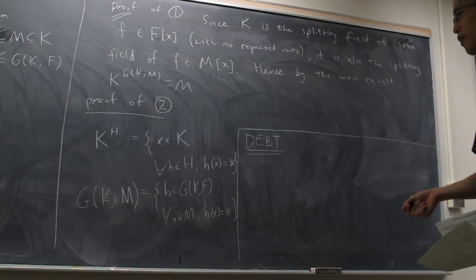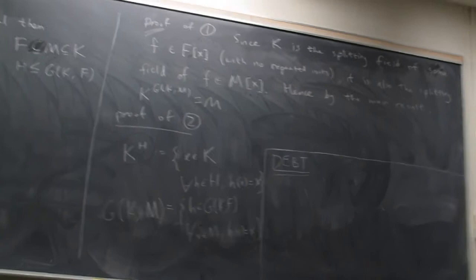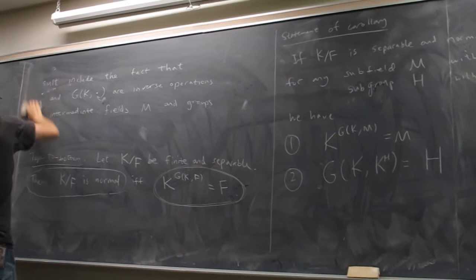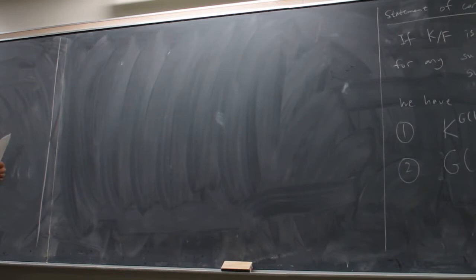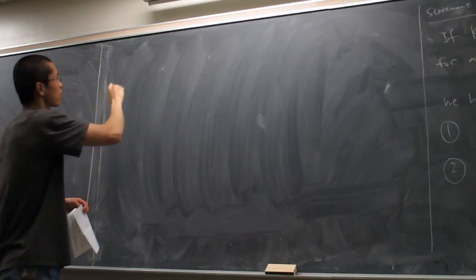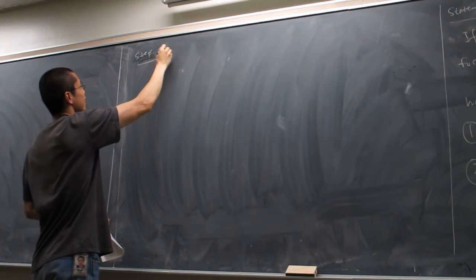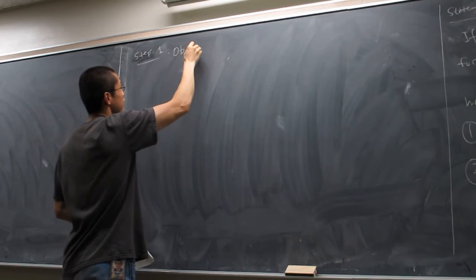The proof of item two has four steps. Step one: there's a degree-of-freedom observation about the sizes of the sets involved. The amount of symmetries in a subgroup is at most the amount of symmetries in the group, which itself is less than the actual vector space dimension of K as an extension of K^H.